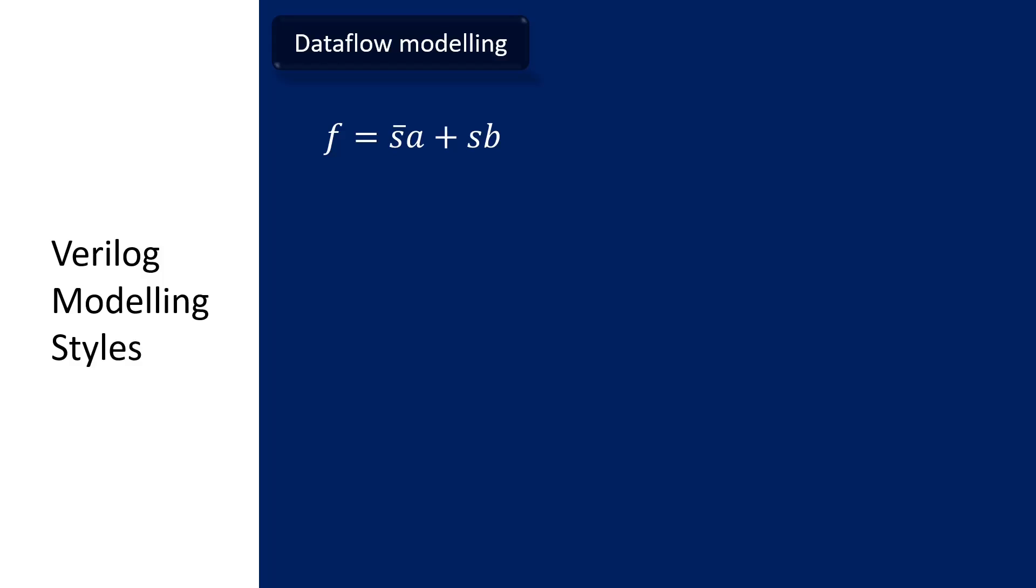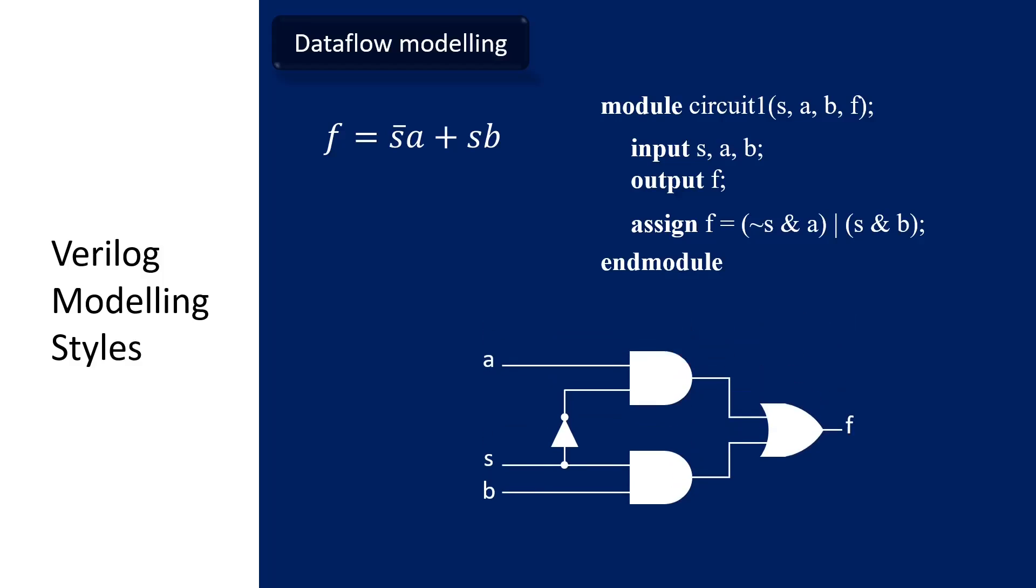If you have a Boolean equation, F equal to not S and A or S and B. Now, let's see how we can code this in Verilog using dataflow modeling. And this code will be synthesized into this circuit exactly based on the Boolean equation.